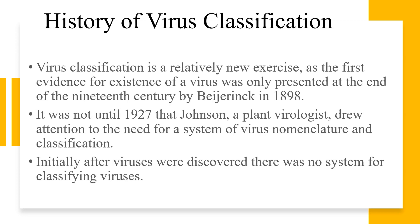Let's talk about the history of virus classification. The first evidence for the existence of a virus was presented by Beijerinck in 1898. In 1927, Johnson, a plant virologist, drew attention to the need for a system of virus nomenclature and classification. Initially, after viruses were discovered, there was no proper system for classifying them, and so the viruses were named haphazardly.